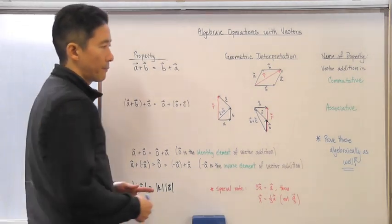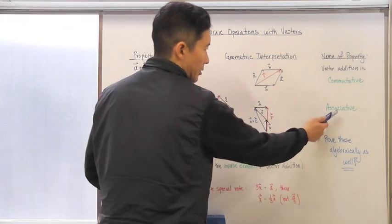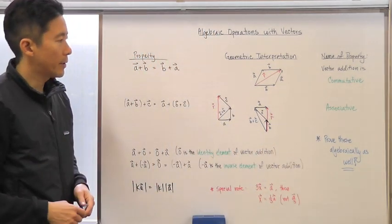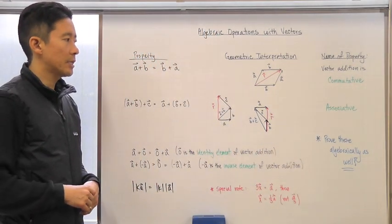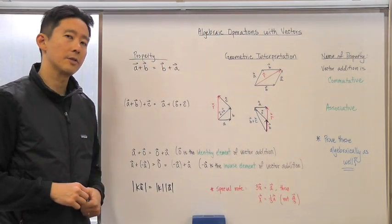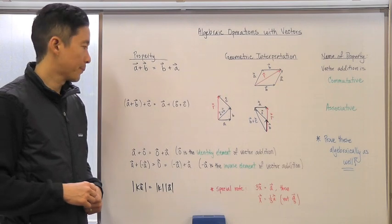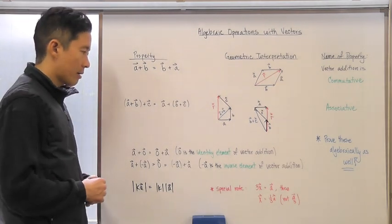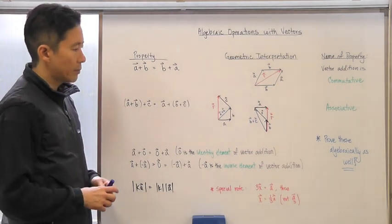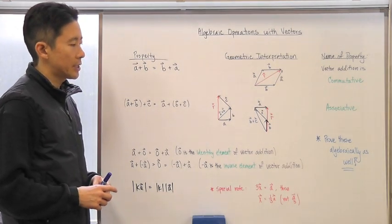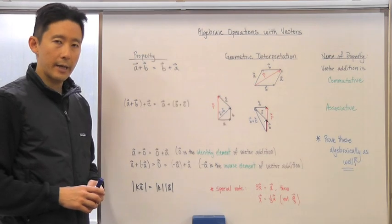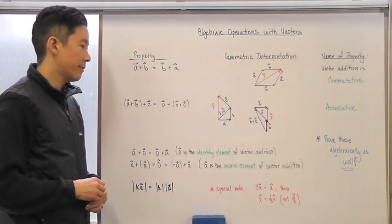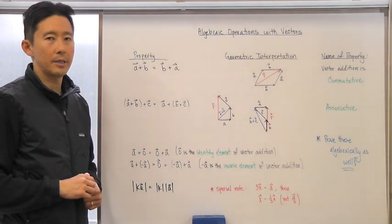This property is the associative property — vector addition is associative. The next two properties deal with vector addition in particular, looking at what the identity element and the inverse element are. If you recall working with matrices, that should ring a bell as to what we mean by the identity and inverse elements.